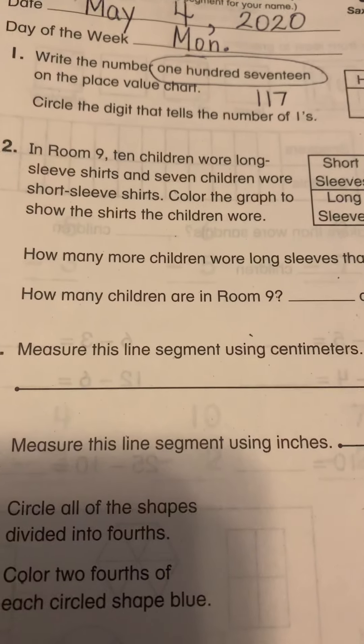Number three, measure this line segment using centimeters. Oh, that's the wrong side, isn't it? I'm going to turn it to the centimeter side. I'm going to make sure it's lined up over here at the edge. I've got to go over here. 12 centimeters. 12 centimeters is equivalent to almost five inches. Not quite. About four and three-fourths inches.